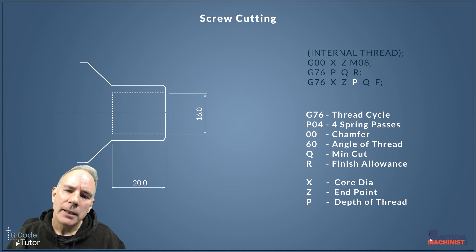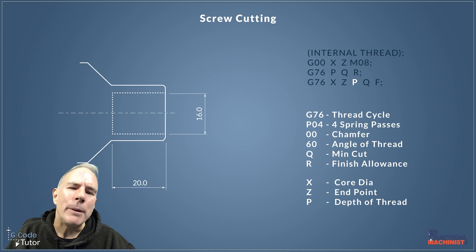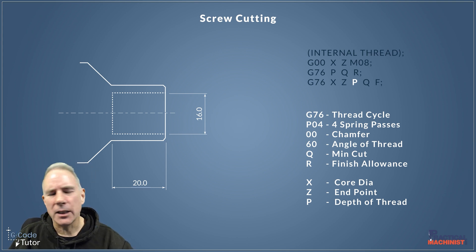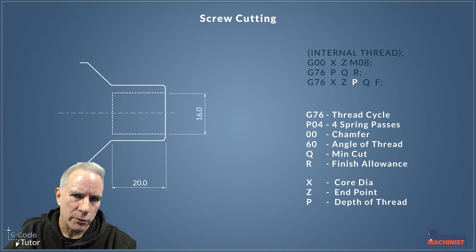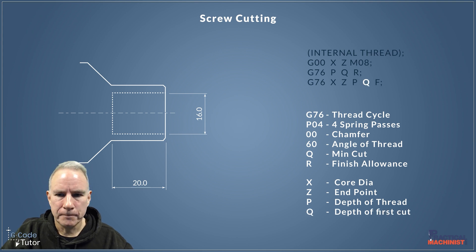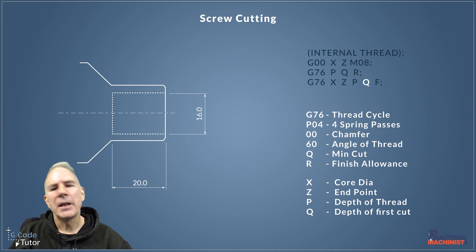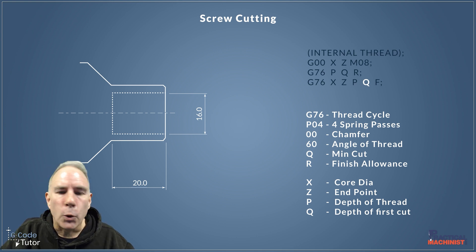Now we come to our second P value. Words like P and Q are used for multiple purposes across different parts of the program, so they don't always mean the same thing. The P in the first line designated spring passes, chamfer, and angle of thread, but the second P is our depth of thread — also in microns, so 0.1 mm would be 100, and 1 mm would be 1000. The second Q value is the depth of the first cut. The machine will take the depth of the first cut and gradually minimize it until it reaches the depth of the final cut with each successive pass — this Q is also in microns.